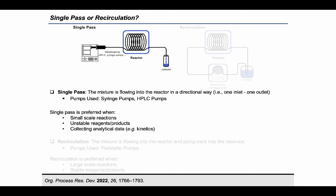With this approach, the mixture is flowing into the reactor in a directional way. For this setup, syringe pumps and HPLC pumps are the most common feeding devices adopted. This design is mainly used for small-scale reactions and when unstable reagents and products are involved in the process.